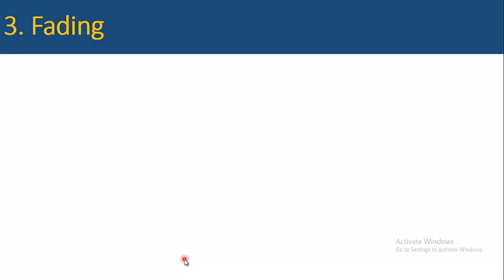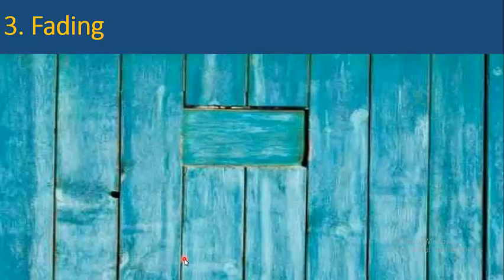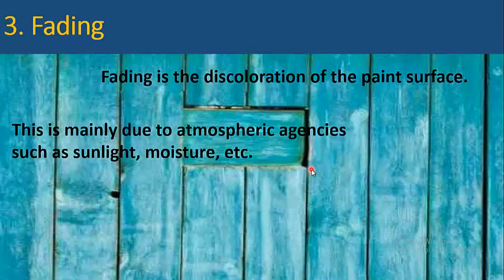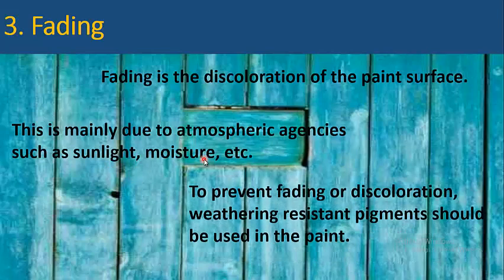The third one is fading. Fading is the discoloration of the paint surface. As you can see in this picture, some portions of the painted surface have discolored. This is mainly due to atmospheric agencies such as sunlight, moisture, etc. To prevent fading or discoloration, weathering resistant pigments should be used in the paint.